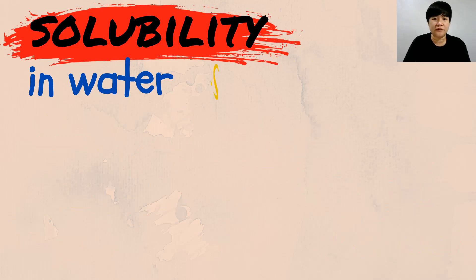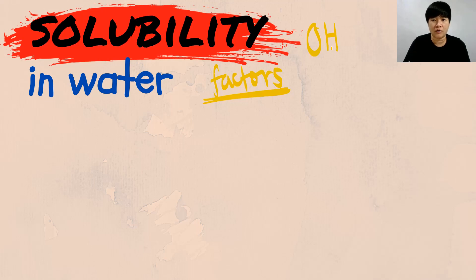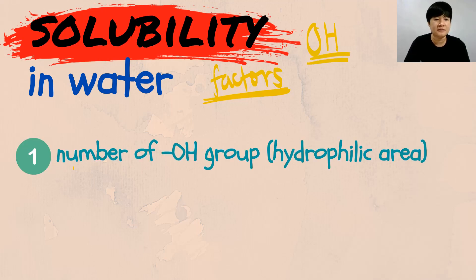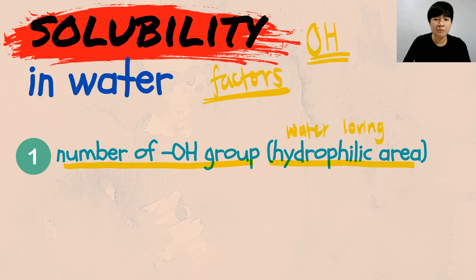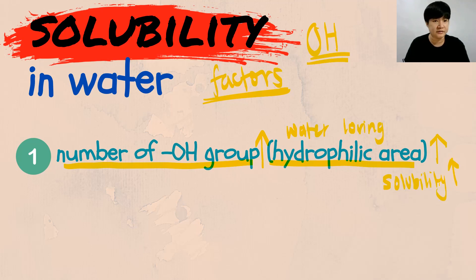Let's go into the factors affecting the solubility of alcohol in water. The first factor is the number of OH groups, because your OH group is your hydrophilic area — your water-loving area. If the number of OH groups increases, your hydrophilic area becomes bigger. Therefore, the solubility of the alcohol will also increase because it's easier to dissolve in water when you have more hydrophilic area.